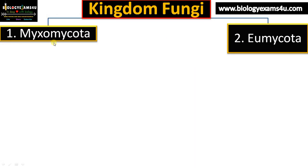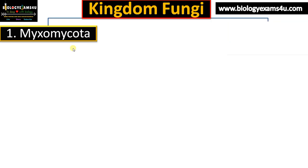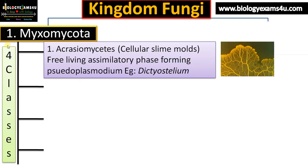Division Myxomycota is divided into four classes. The first one is Acrasiomycetes — the cellular slime molds. They have a free-living assimilatory phase and often form pseudoplasmodium or false plasmodium. Example is Dictyostelium.